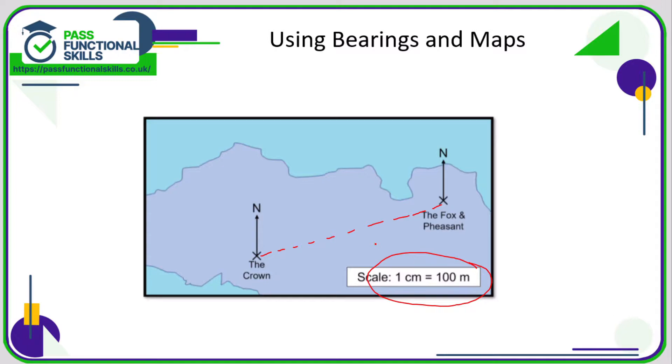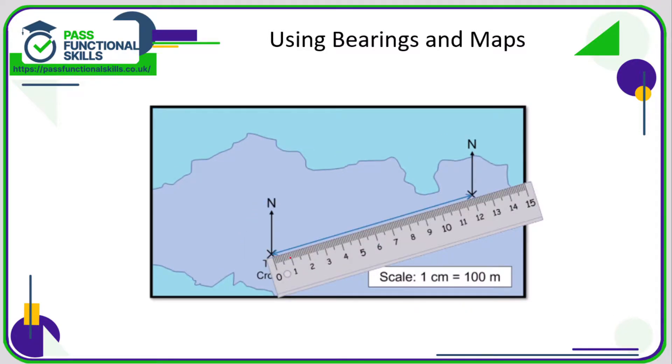What we're going to do is grab our rulers, put one end on the X of The Crown and the other on the X of The Fox and Pheasant, and we'll see that that is 12 centimeters.